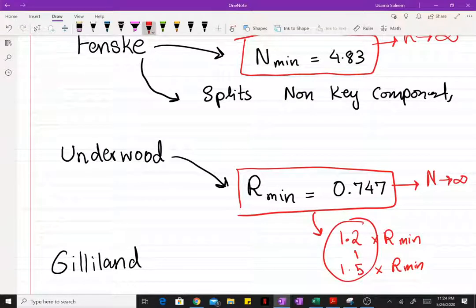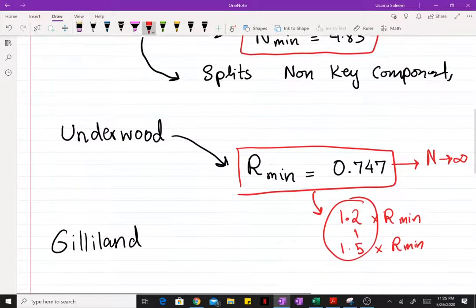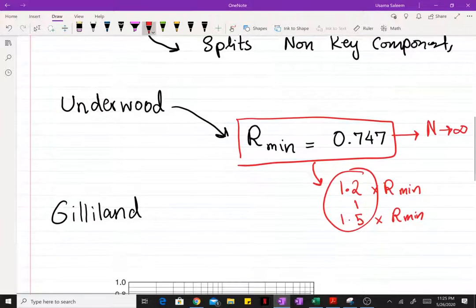Keep in mind it's 1.2 times the minimum reflux ratio, not the actual number. Now once you have specified the operating reflux ratio, let's say we specify for our purpose the operating reflux ratio to be 1.2 times the minimum reflux ratio.